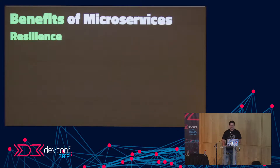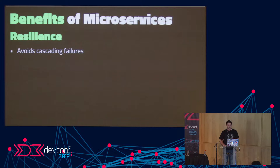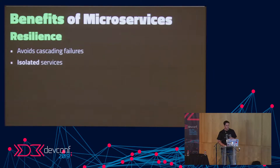Another benefit is resilience. In resilience engineering, there is the concept of the bulkhead — if something fails and the bulkhead remains intact, it doesn't affect other parts of your system. If the bulkhead fails, you end up with cascading failures. That's another reason to make sure your microservices are not tightly coupled, because if they are, one failing leads to another failing, and instead of solving one problem you have to resolve multiple microservices.